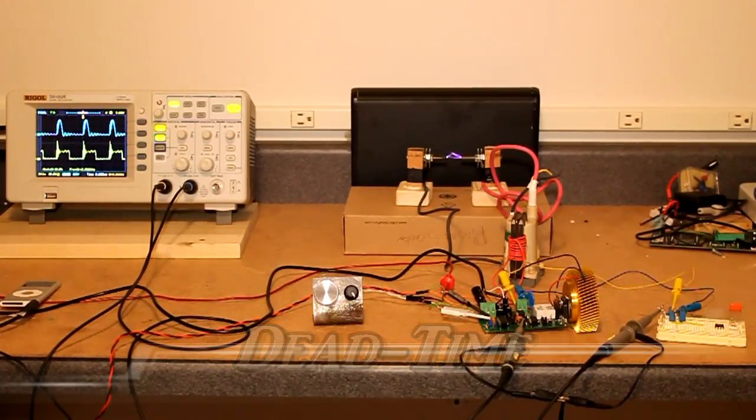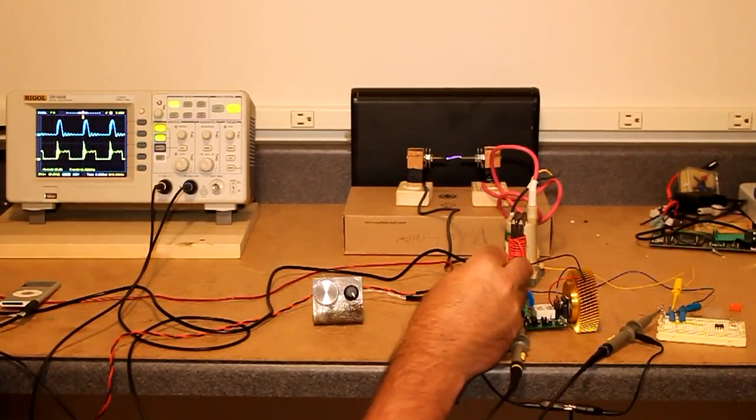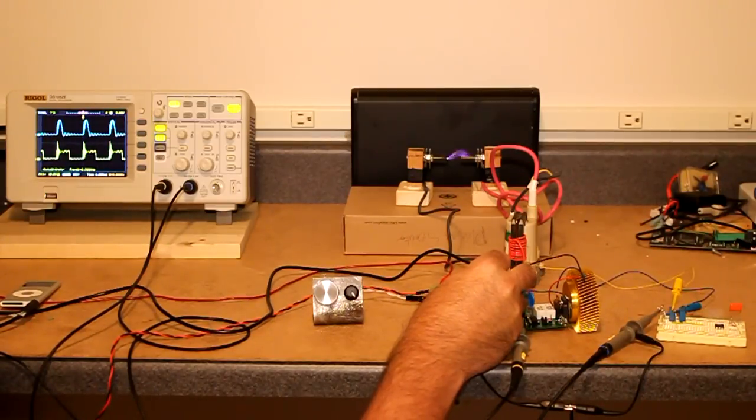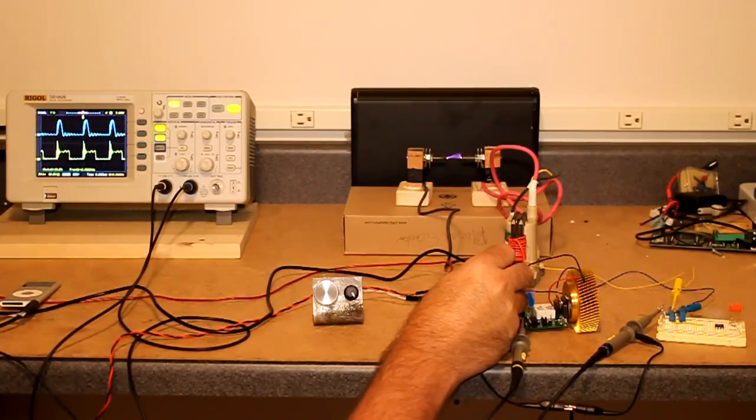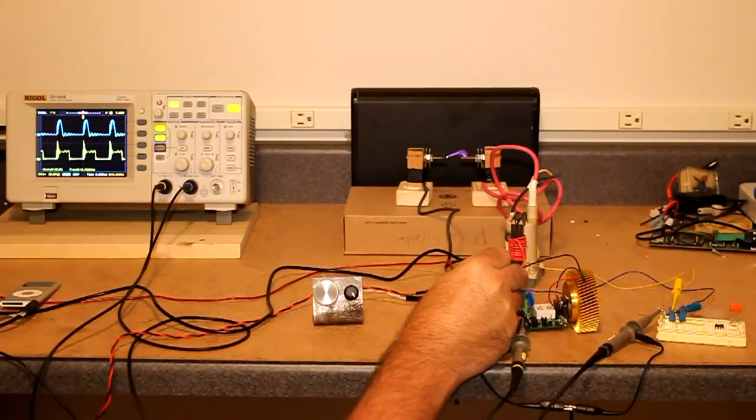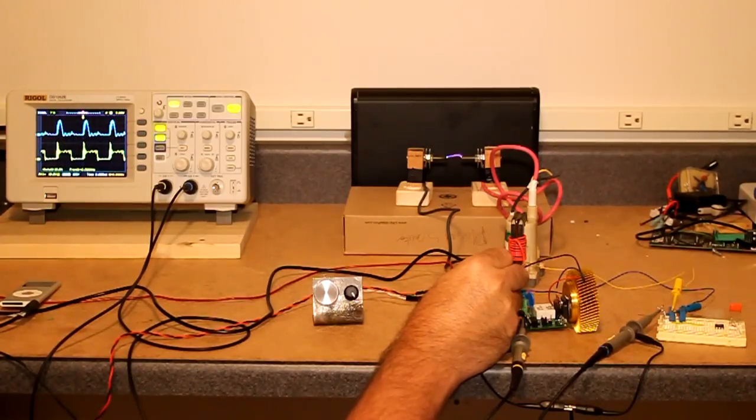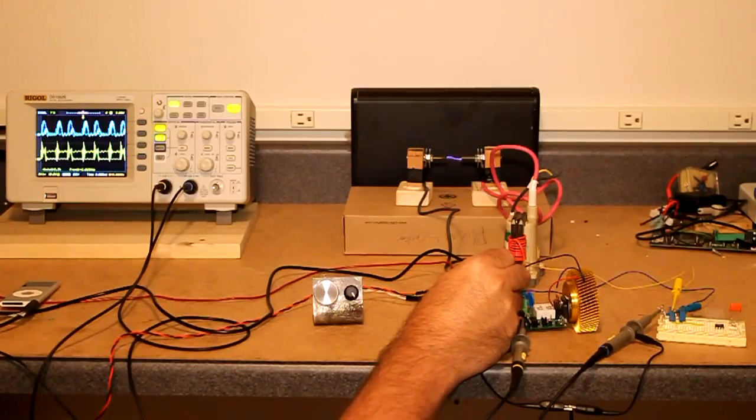The other adjustment is the dead time. I have that as a little pot here on the circuit board. And that controls the width of the on pulse compared to the width of the off pulse. So if I turn it this way, see we're widening the top of the yellow trace there and shortening the bottom. Go too far and we're not stable. Bring it back, we're stable again.